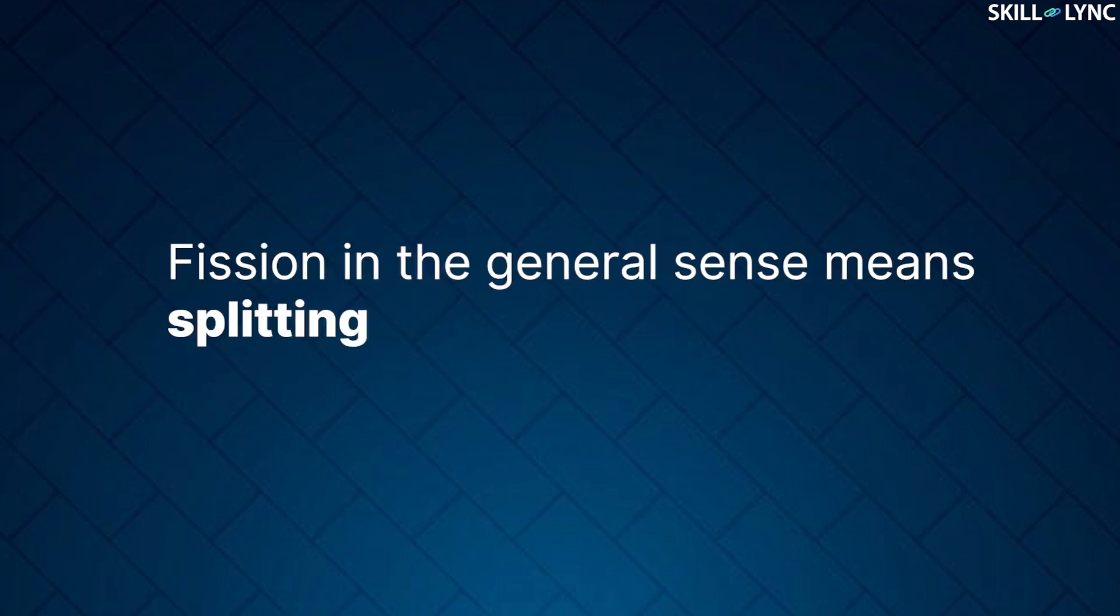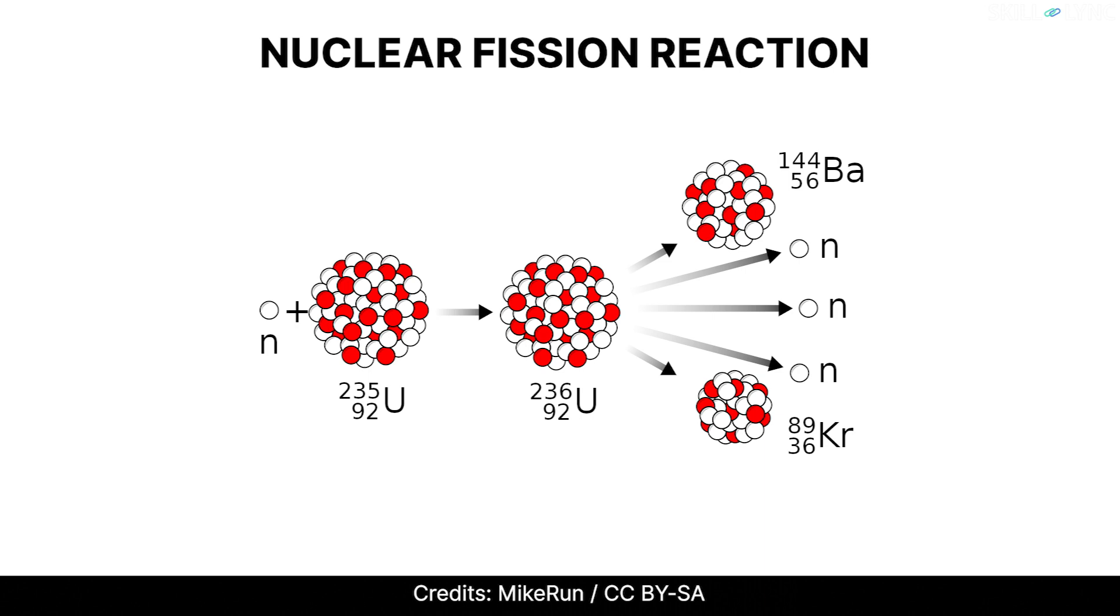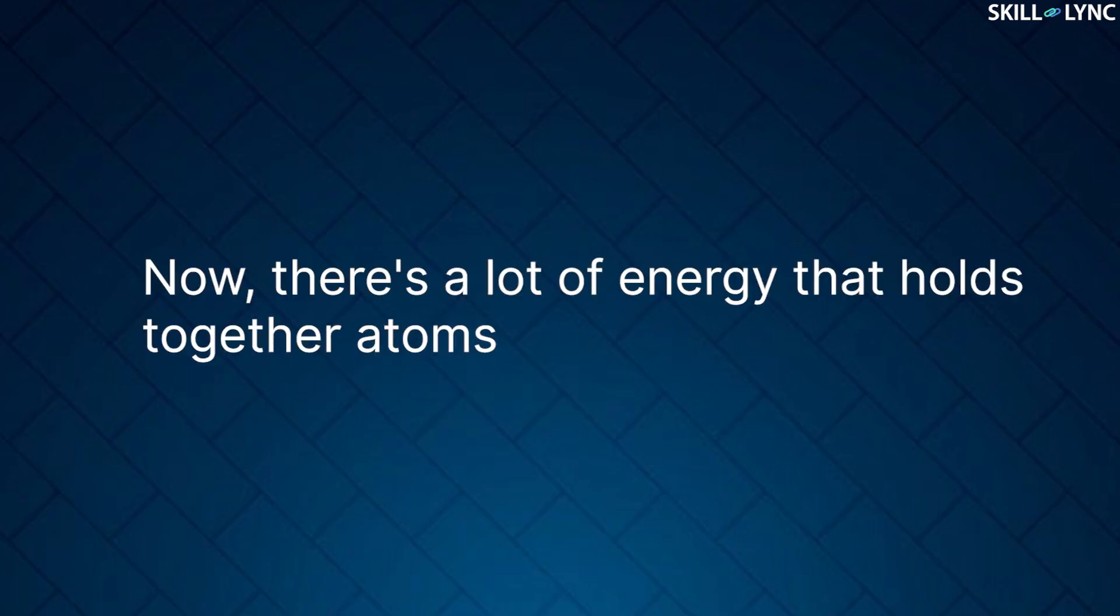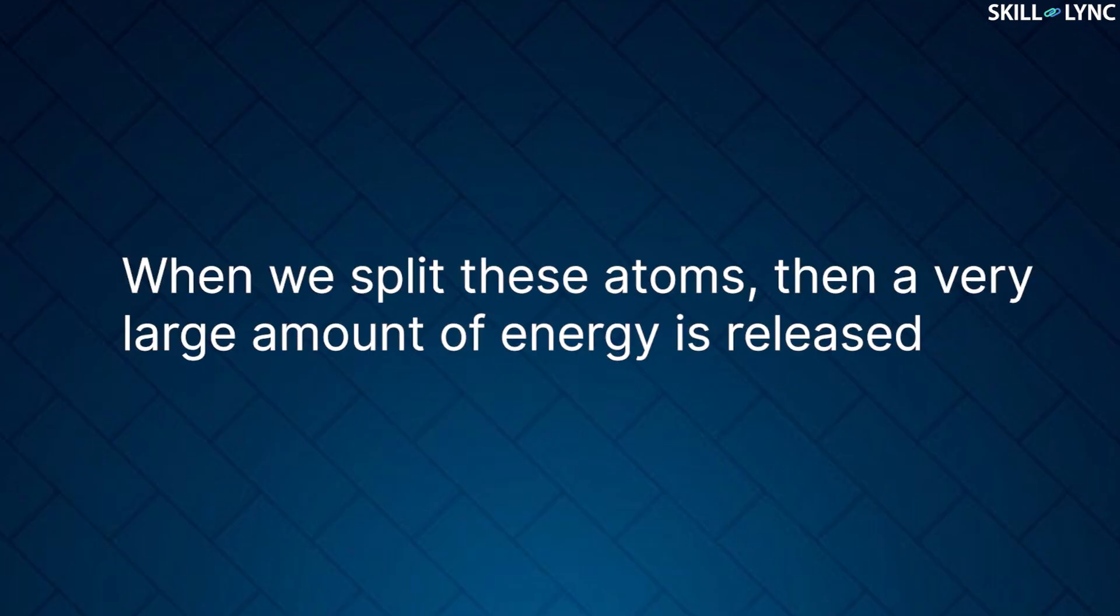Fission in the general sense means splitting. When it's nuclear fission, it means that the nucleus of an atom splits into smaller nuclei. Now, there's a lot of energy that holds together atoms. When we split these atoms, then a very large amount of energy is released.